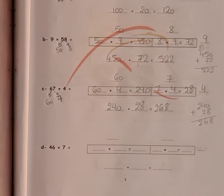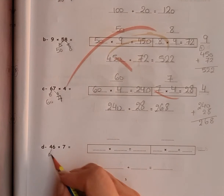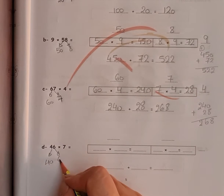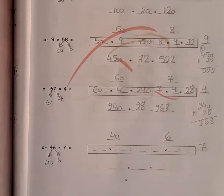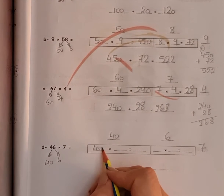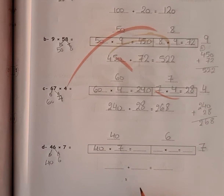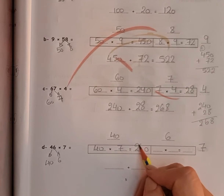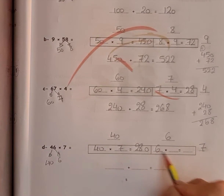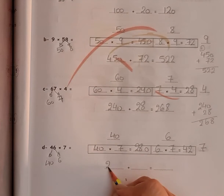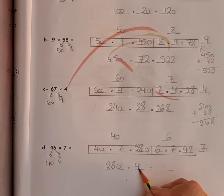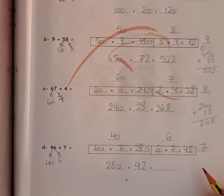Question D: 46 times 7. I will break down the 46 into 40 and 6. Write 40 here and 6 there, times 7. 40 times 7: kick the 0 out, 4 times 7 equals 28, giving 280. Then 6 times 7 equals 42. Please revise your times tables! 280 plus 42 — work it out — equals 322.